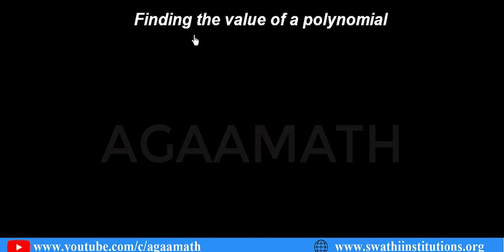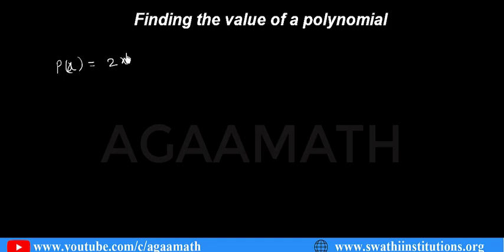How to find the value of a polynomial — let us see. Let me take a polynomial like p of x. P of x indicates that we are writing a polynomial in terms of the variable x. So that is 2x squared minus 5x plus 3. This is our polynomial.